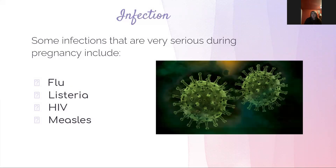Pregnancy also causes increased blood circulation and demands on the heart. These demands can worsen complications — for example, if a pregnant woman develops pneumonia from the flu, she could have difficulty breathing because of the increased demands of the fetus. Infections with detrimental effects on pregnancy include flu, listeria, HIV, and measles.